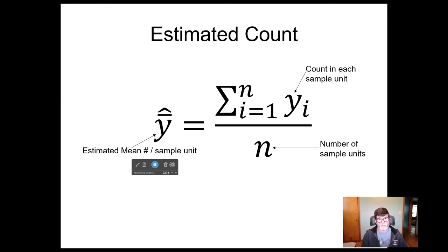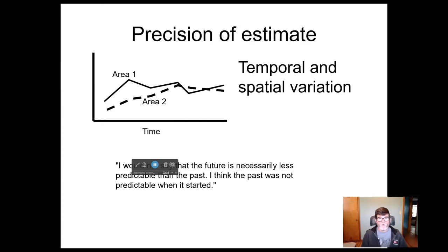So getting the estimated count is actually pretty easy. What's harder is to try and understand the precision of our estimate, because variation in the number of elements per unit comes from a number of different sources.